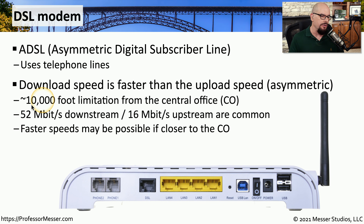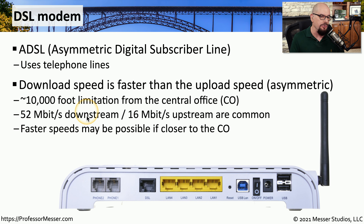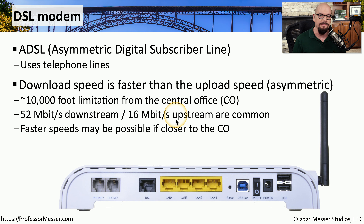Those speeds will vary based on how far you are from the central office — usually there's about a 10,000-foot limitation for receiving a DSL signal. Normally you'll find DSL speeds around 52 megabits downstream and 16 megabits upstream, though you might get faster speeds if you're closer to the central office.